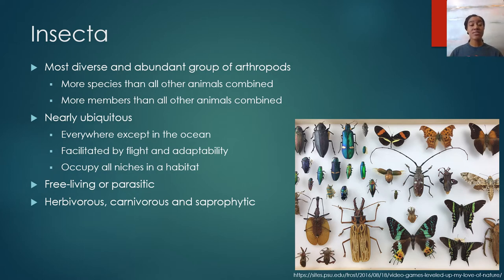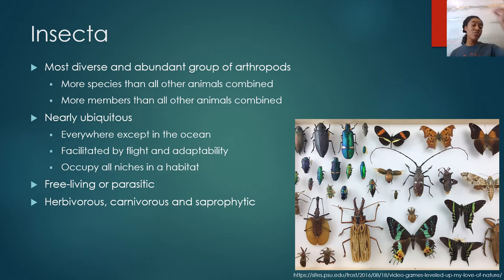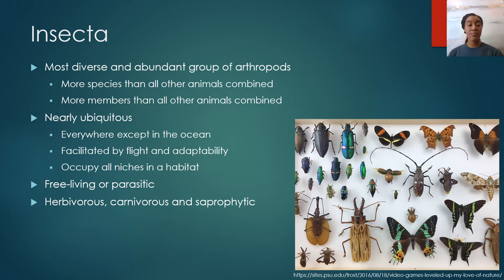Their nearly ubiquitous nature has been attributed to two main factors: their ability to fly, and their rapid ability to adapt. Flying allows them to colonize new habitats easily, and their rapid adaptation helps them thrive once there. Insects can occupy every niche of a habitat — one insect will occupy one niche, another will occupy a different niche, until basically every niche is occupied by some species of insect.